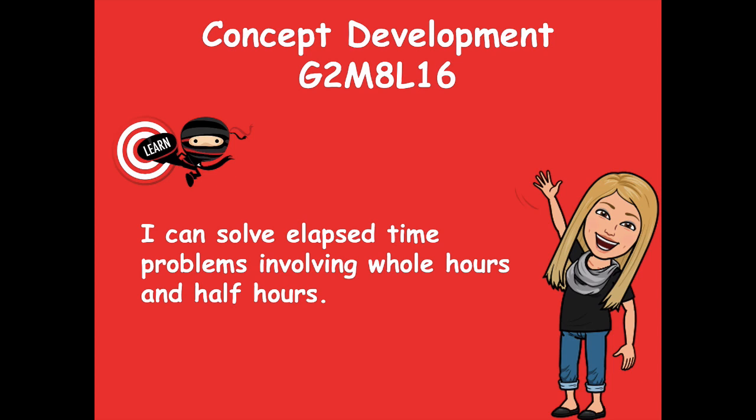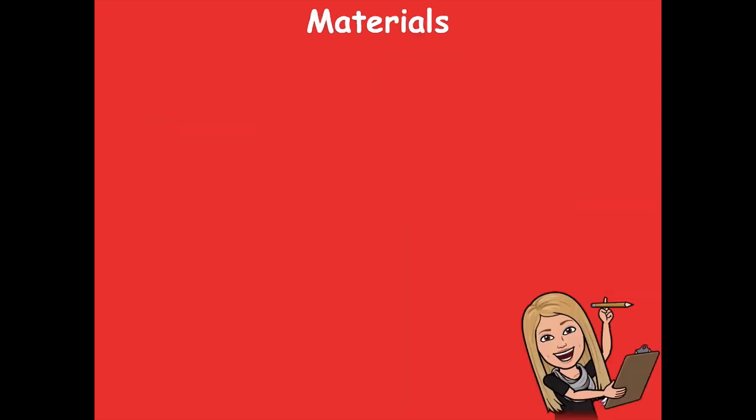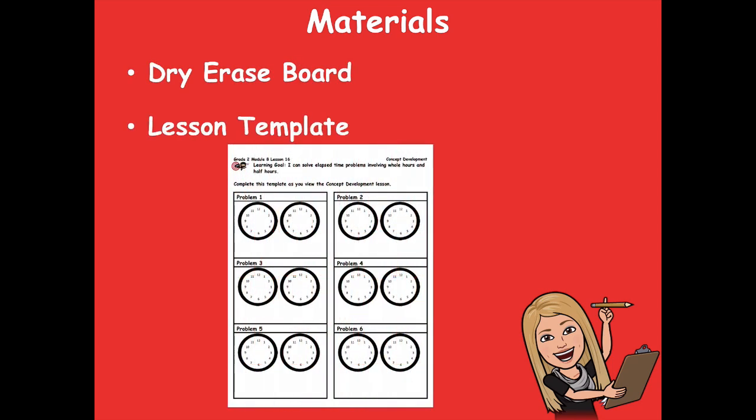The materials you'll need for this lesson are your dry erase board or a piece of paper, and you'll need this lesson template. This lesson template is not in your math book, so if you don't have a copy in the module, there's also a link to it in the video itself. If you don't have capabilities to print it, that's okay — you'll just have to draw the clocks out. Just know that 12 is always on the top, six is on the bottom, and nine and three are straight across from each other on the side. Put those numbers in first, and then it's easier to put in the rest of the numbers.